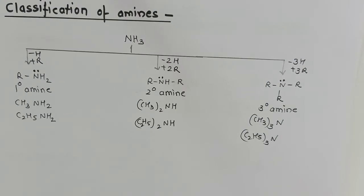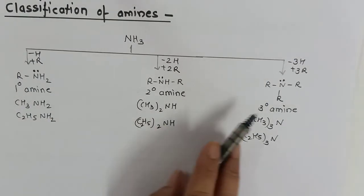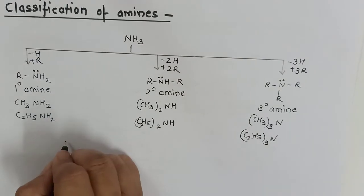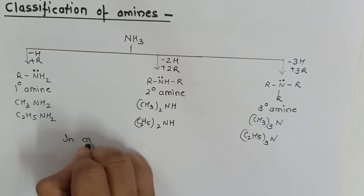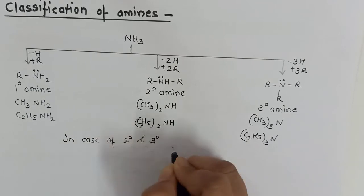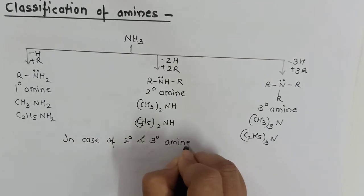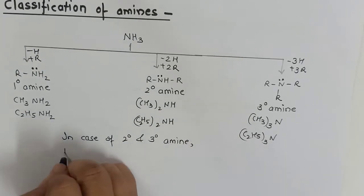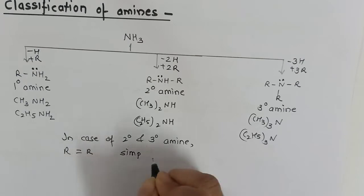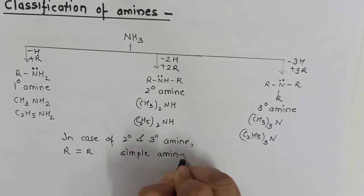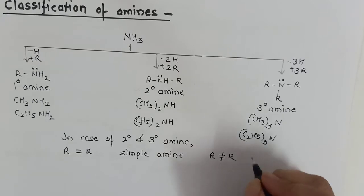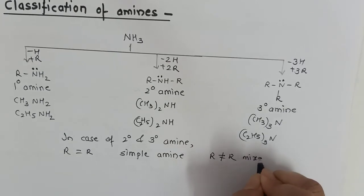Amines can be classified into primary, secondary, and tertiary degrees. Especially for secondary and tertiary amines, if both alkyl groups are the same, we call it a simple amine; but if both alkyl groups are different, we call it a mixed amine.